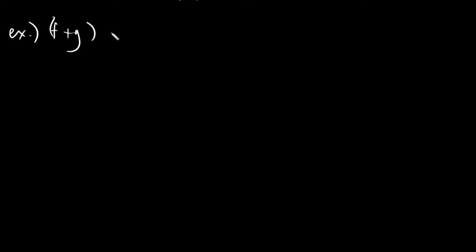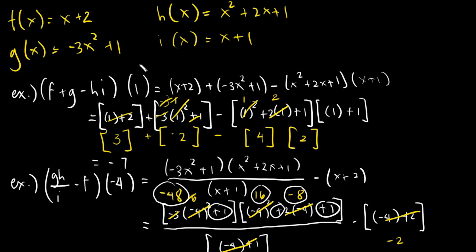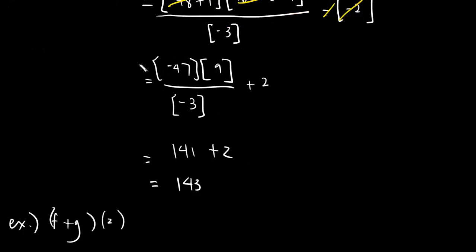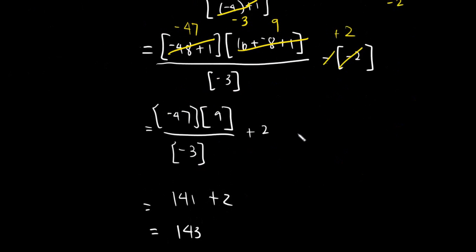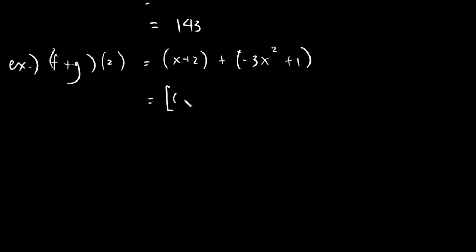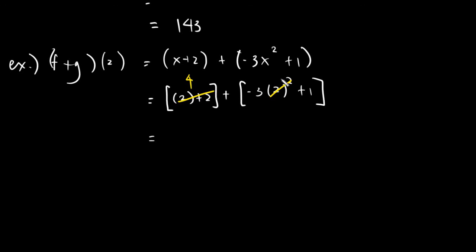Let's have another simple example. Say I have (f + g)(2). f is (x + 2) and g is (−3x² + 1). So it equals [(2) + 2] + [−3(2)² + 1]. Solving this: 2 + 2 is 4. 2² is 4, and 4 × (−3) is −12. Negative 12 + 1 is −11. Adding them, since we have addition: 4 + (−11) = negative 7.